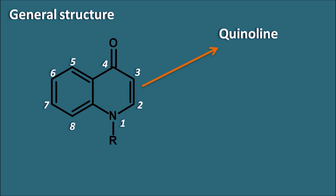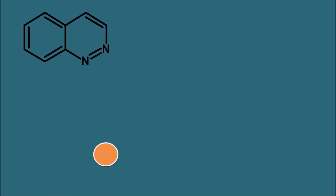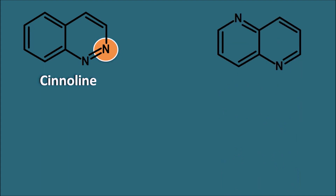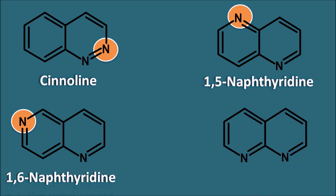Before fluoroquinolones were developed, the quinoline ring was modified to produce many types of compounds. The nitrogen can replace the carbon at positions 2, 5, 6, and 8. Replacing carbon at the 2nd position gives the cinnoline ring system. Replacing at the 5th position gives the 1,5-naphtheridine ring system. Carbon replacement at the 6th position gives the 1,6-naphtheridine ring system, and at the 8th position gives the 1,8-naphtheridine ring system.